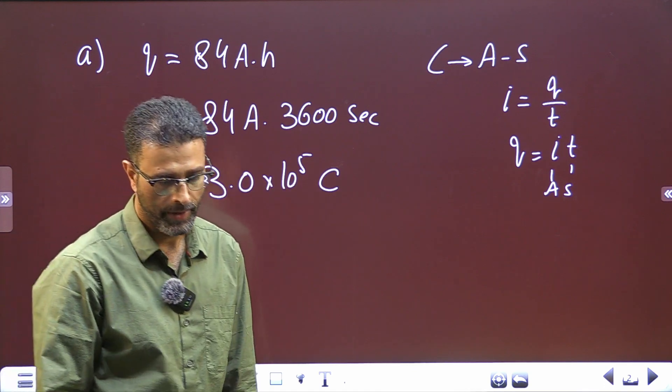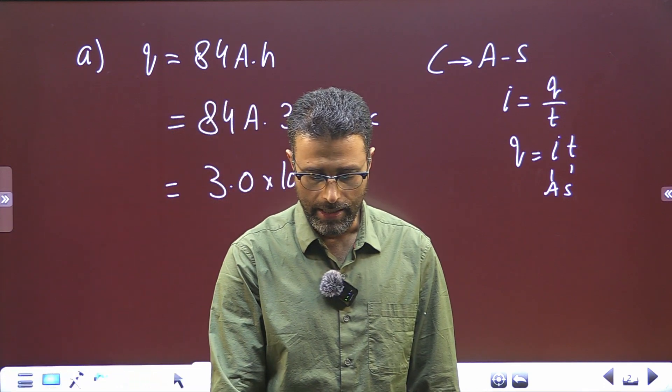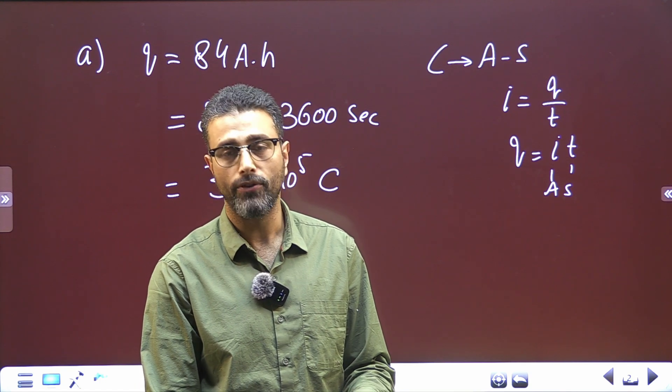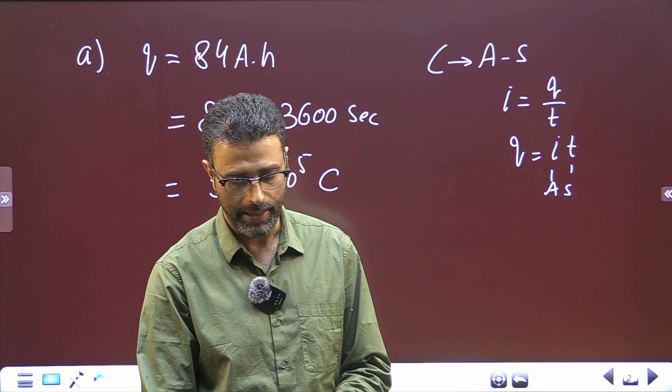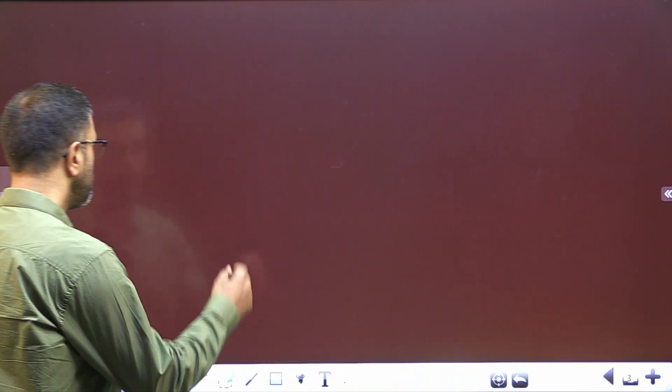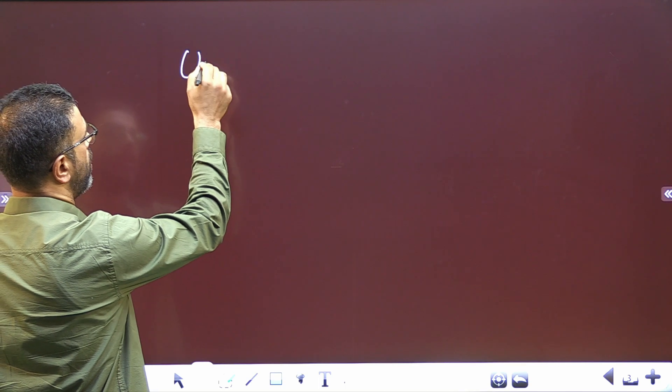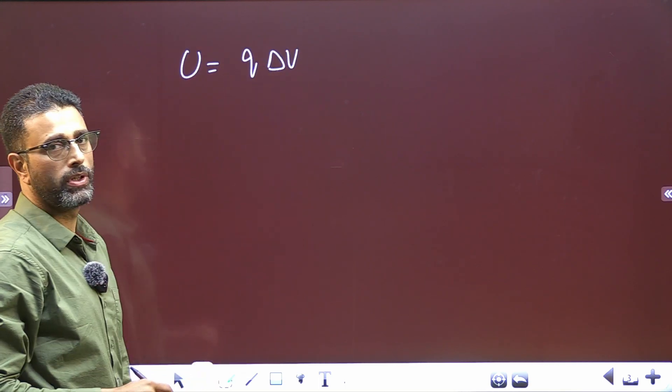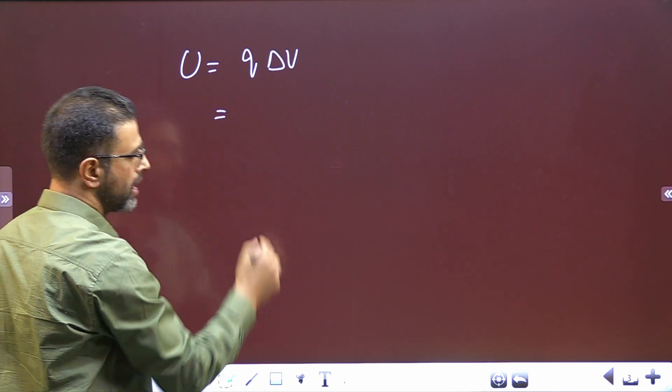In the second part, if this entire charge undergoes a potential change of 12 volts, what must be the energy evolved? Energy evolved is simply q times delta V, charge times potential difference. The charge we have already calculated.